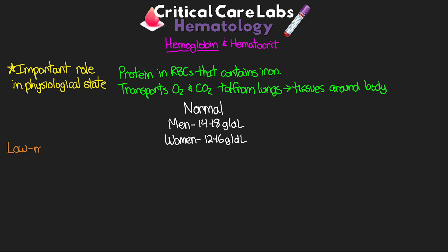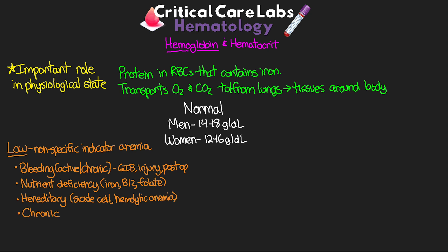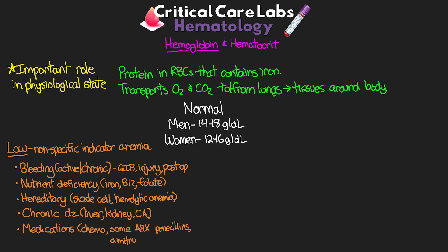If our patient has low levels, this is going to be a nonspecific indicator of anemia. Some of the potential causes could be things like bleeding — either active or chronic, so think your GI bleed, injury, post-op, etc. Nutrient deficiencies such as iron, B12, and folate. Hereditary disorders like sickle cell and hemolytic anemia. Chronic diseases such as liver, kidney, and even cancer. And then some medications like chemo drugs, some antibiotics such as our penicillin group, and the antidepressant amitriptyline.